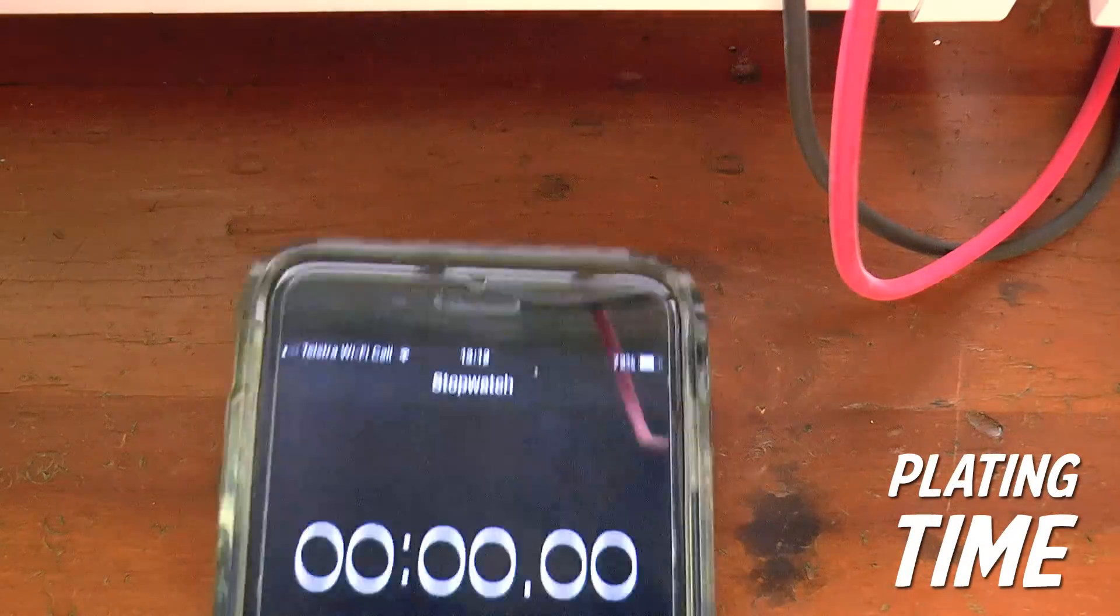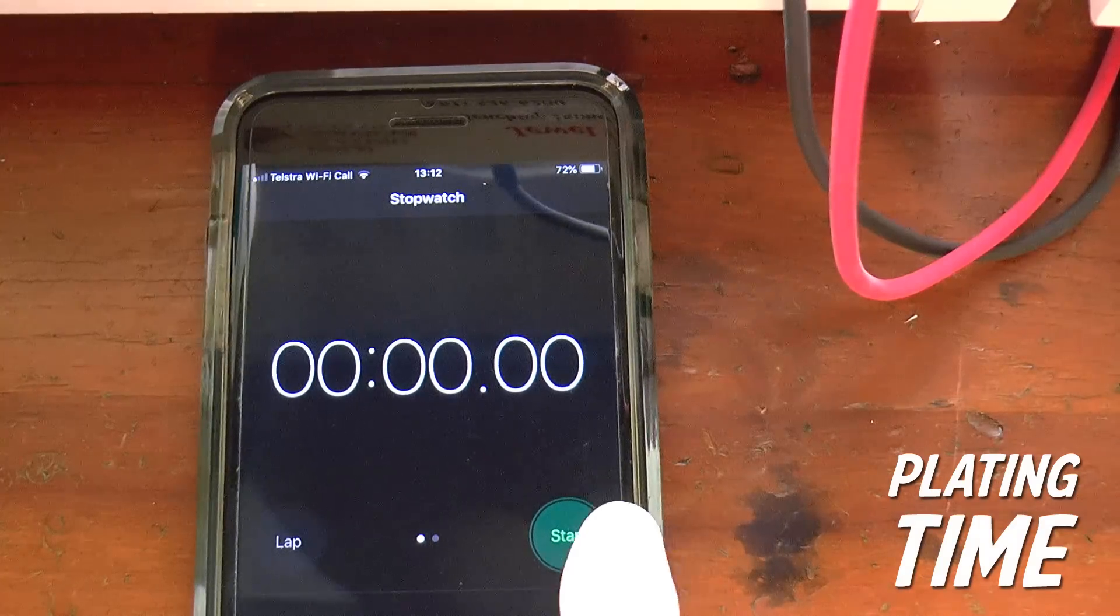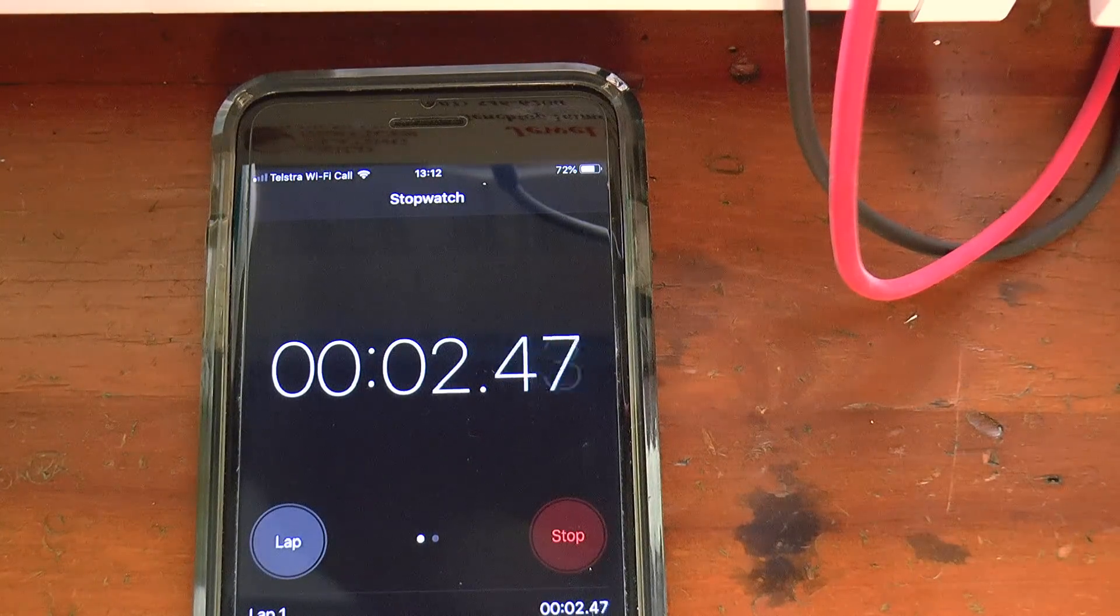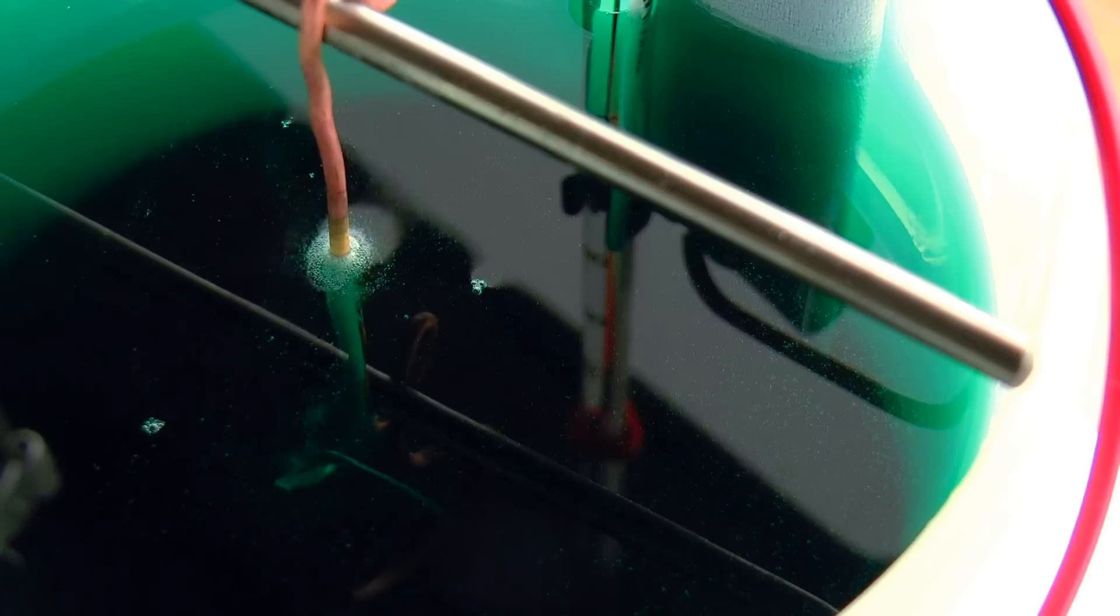So this means that if temperature and voltage are considered as constants, then the plating time becomes the means of controlling both the depth and to some extent the quality of the plated surface.